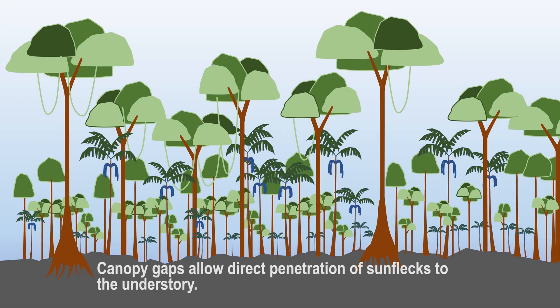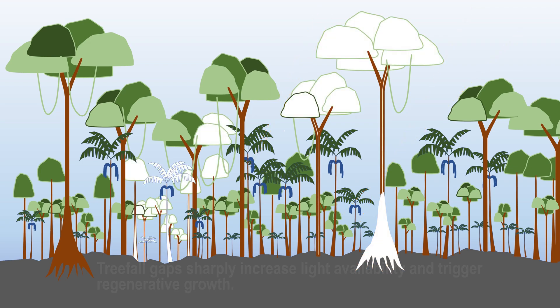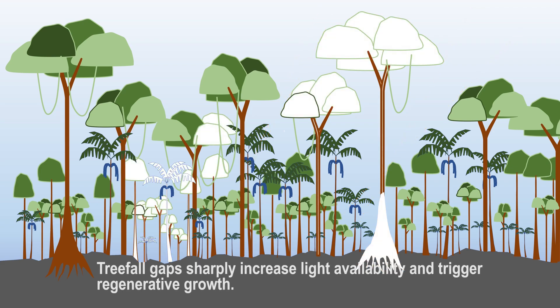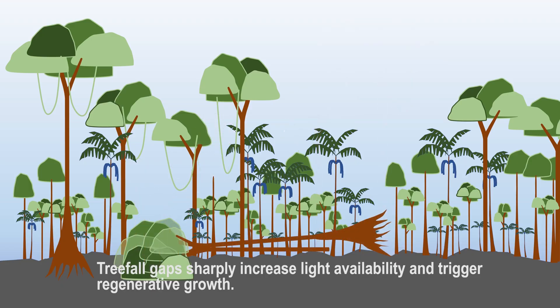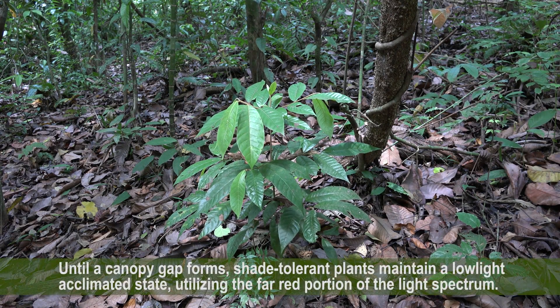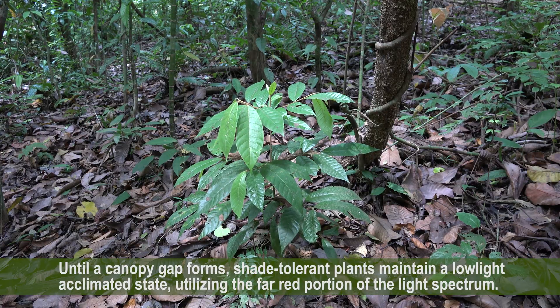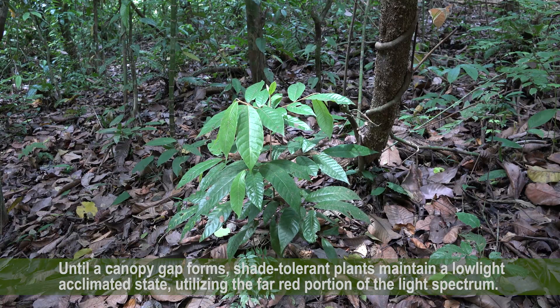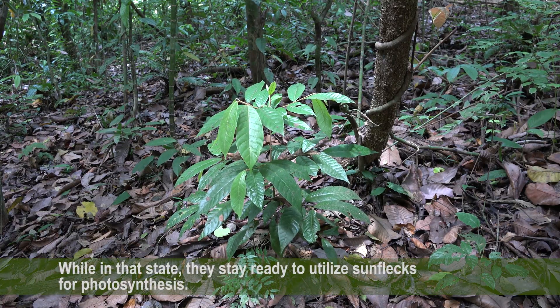Canopy gaps allow direct penetration of sunflecks to the understory. Tree-fall gaps sharply increase available light for photosynthesis and trigger regenerative growth. Until a canopy gap forms, shade-tolerant plants maintain a low-light acclimated state, utilizing the far-red portion of the light spectrum. While in that state, they stay ready to utilize sunflecks for photosynthesis.